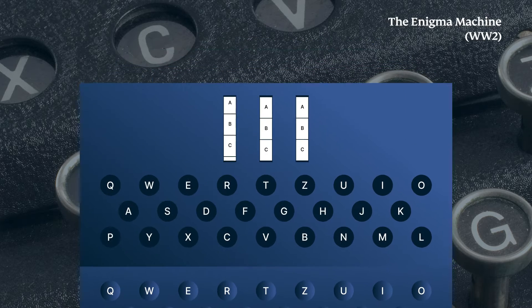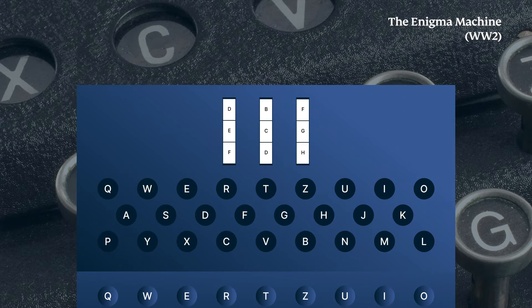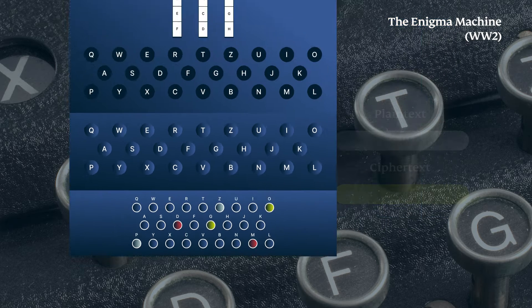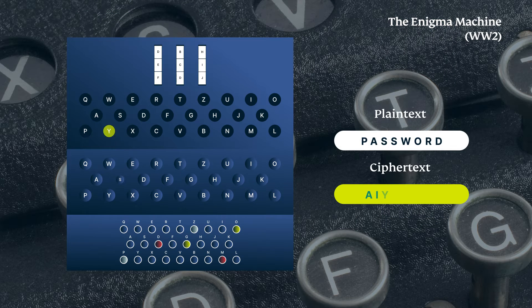The Enigma machine, a German-made World War II device, was decrypted by Alan Turing's team, altering the war's outcome and inspiring cryptographic advancements.